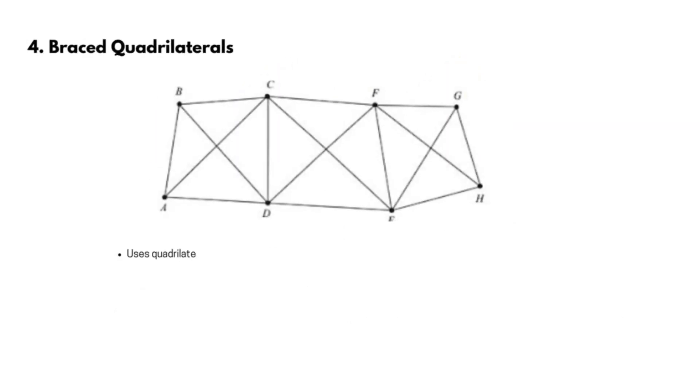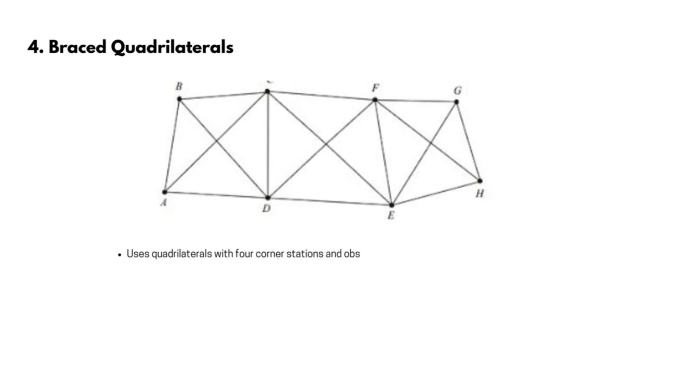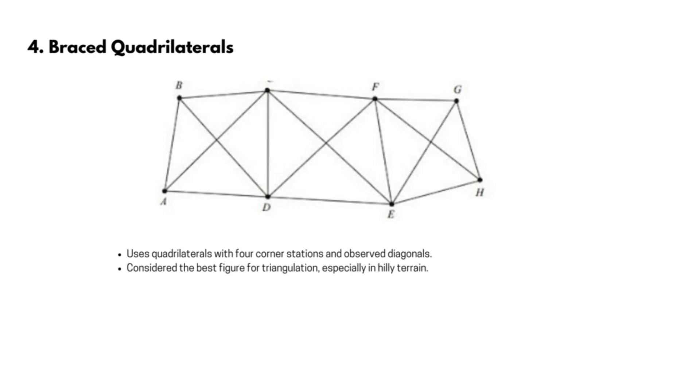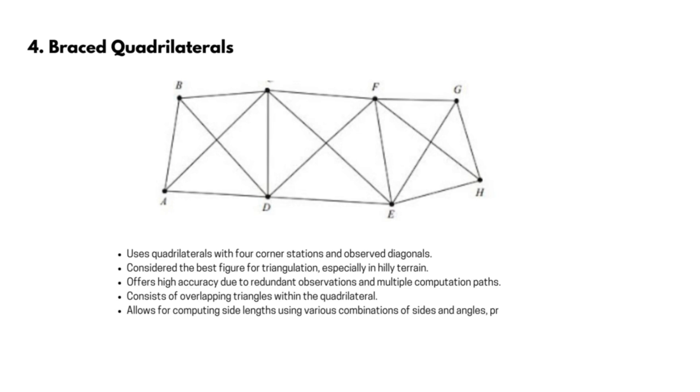4. Braced quadrilaterals. The quadrilateral with four corner stations and observed diagonal forms the best figures. It is best suited for a hilly country. Since the computed length of the sides can be carried through the system by different combinations of sides and angles, the system is the most accurate. In fact, a braced quadrilateral consists of overlapping triangles. This system is treated to be the strongest and the best arrangement of triangles, and it provides a means of computing the lengths of the sides using different combinations of sides and angles. Most of the triangulation systems use this arrangement.